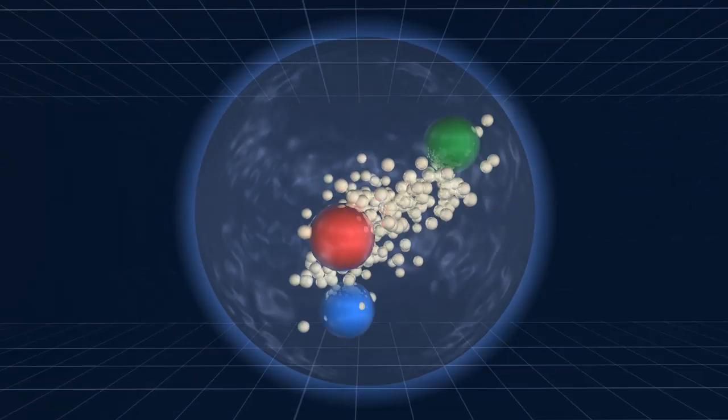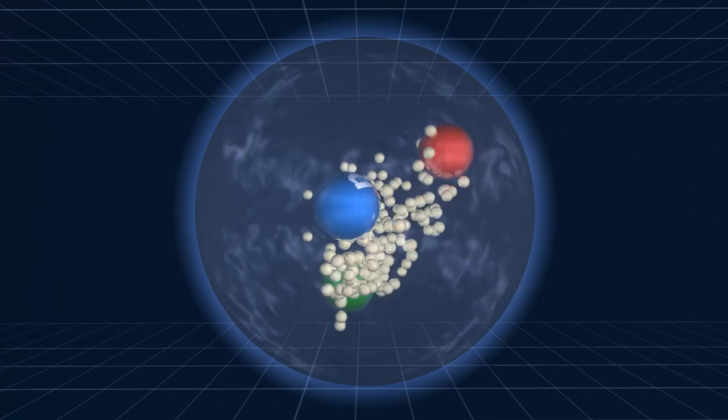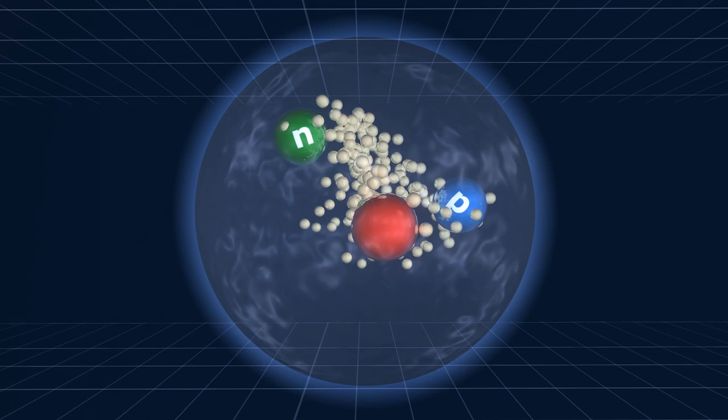Let's zoom in on one of the protons. It is composed of three quarks, two up quarks and one down quark, moving around very close to each other.